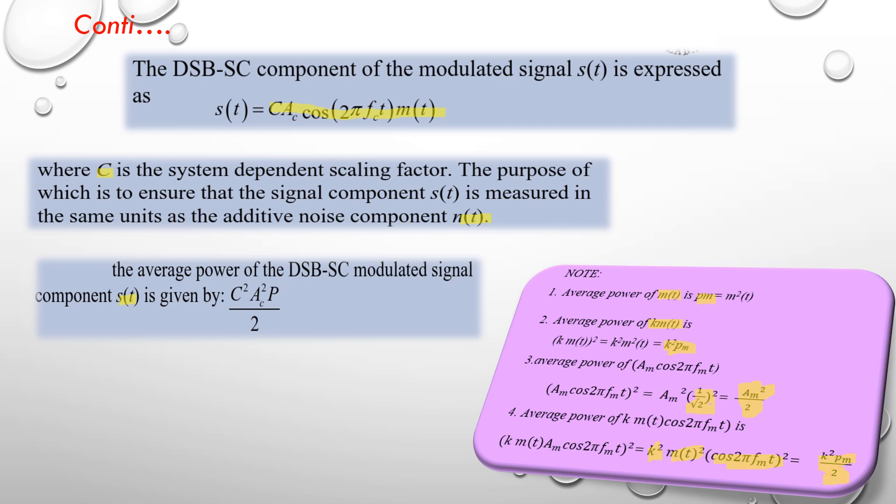So the average power is k² × P_m / 2. The power of the DSBSC modulating signal component s(t) is given by C² × A_c² × P / 2. We know that the DSBSC wave s(t) = C × A_c × cos(2πf_c t) × m(t). Our intention is to find the average power: C² × A_c² × m²(t) × cos²(2πf_c t), where m²(t) = P (average power) and cos²(2πf_c t) = 1/2.